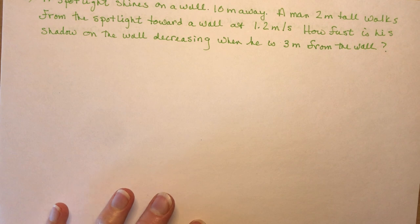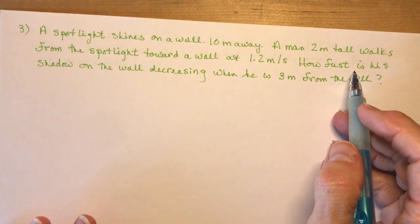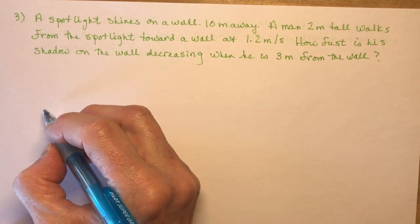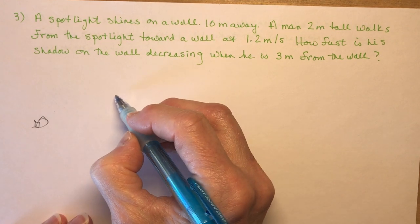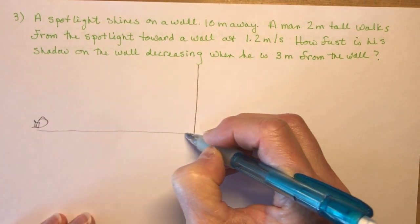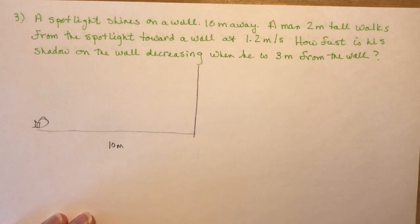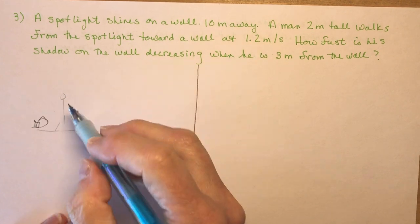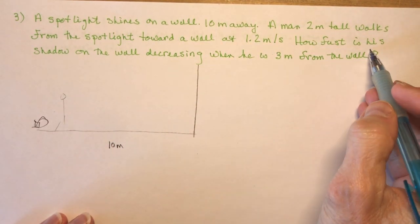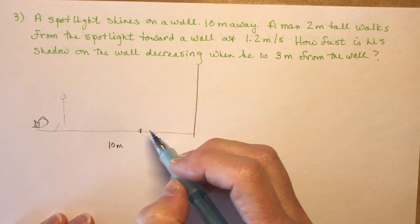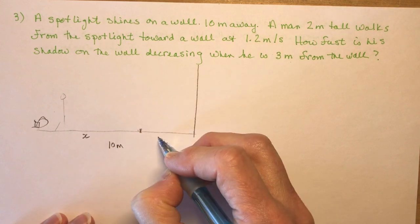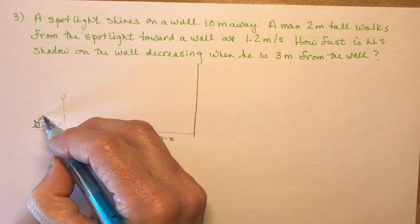Question three: a spotlight shines on a wall 10 meters away. A man two meters tall walks from the spotlight towards the wall at 1.2 meters per second. We've got a spotlight shining and a wall 10 meters away. Wherever you're standing, if you're really close the shadow on the wall goes way up. The man is standing three meters from the wall, meaning he is at distance x from the spotlight where x equals 10 minus 3, and 10 minus x is the remaining distance.